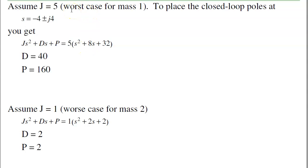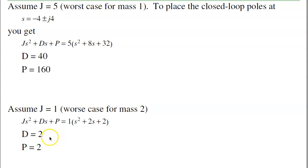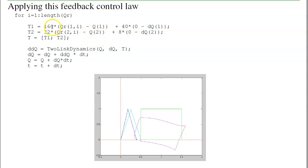Assuming J is 5, which is the worst case for the first link, to place the closed-loop poles at −4 ± j4: J·s² + D·s + P should match that, so with J = 5, D should be 40 and P is 160. For the second link, the worst-case inertia is 1, so to put the poles in the same spot, D is 2 and P is 2. So that's the PD control law — this is the proportional gain. Here are the 40 and 160 from the first link calculations, and for the second link the 2 and 2 wasn't quite stiff enough due to gravity, so I beefed them up to 8 and 32, giving s² + 8s + 32, placing poles at −4 ± j4.